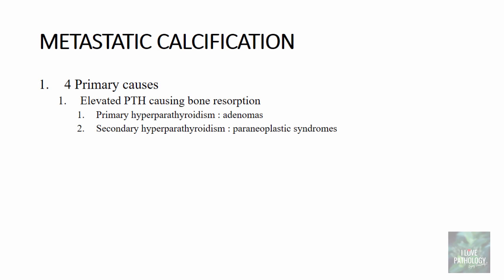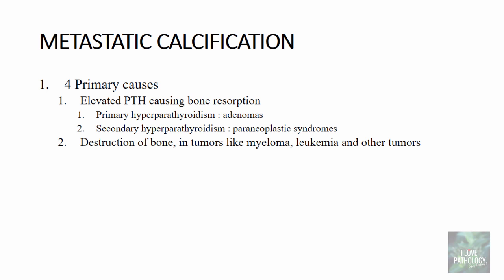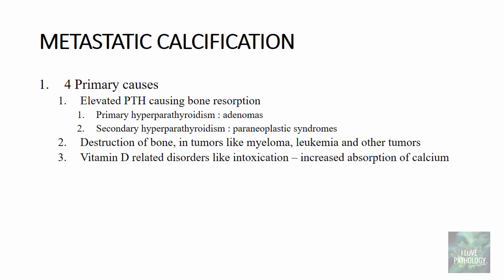The causes of metastatic calcification are: one, elevated parathormone levels resulting in bone resorption, seen in primary hyperparathyroidism such as adenomas of the parathyroid gland, or secondary hyperparathyroidism as in paraneoplastic syndromes releasing parathormone-like substances. Two, destruction of bone in tumors like multiple myeloma and leukemia, releasing more calcium. Three, vitamin D-related disorders such as vitamin D excess or intoxication causing increased calcium absorption. Four, renal failure with phosphate retention.